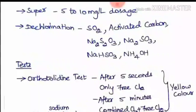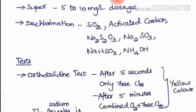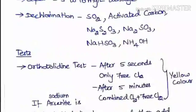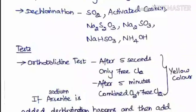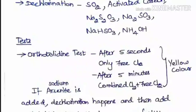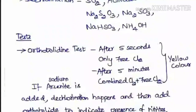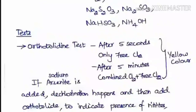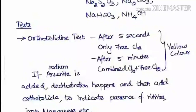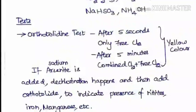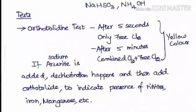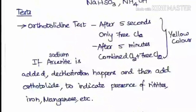If sodium arsenate is added to the solution, de-chlorination occurs so that free chlorine and combined chlorine do not react to give color. After adding sodium arsenate, if orthotolidine reagent is added, the resulting color is purely due to the presence of nitrate, iron, and manganese. Using these values you can find the free chlorine, combined chlorine, and total chlorine.